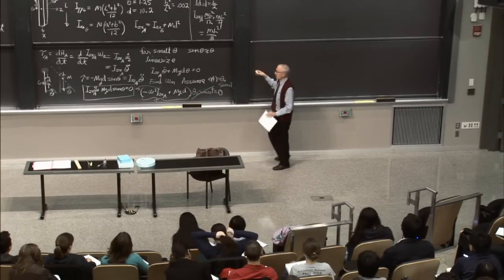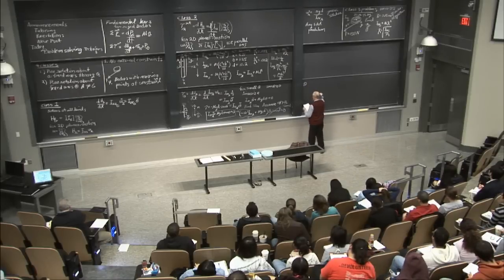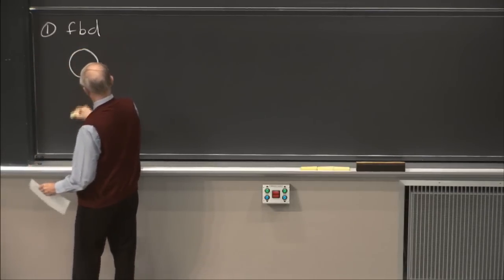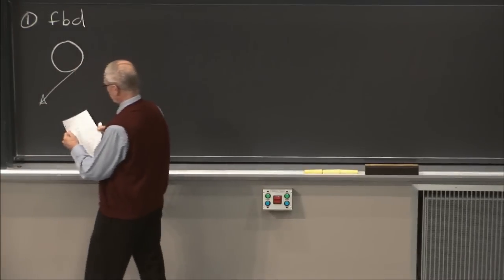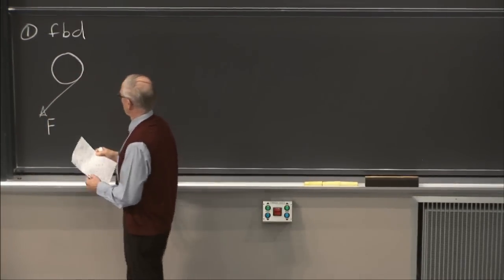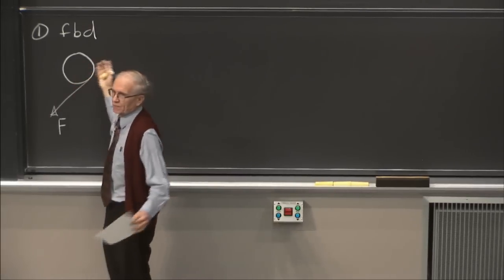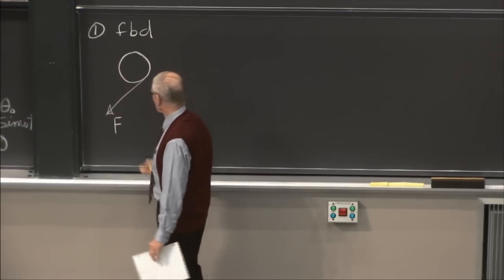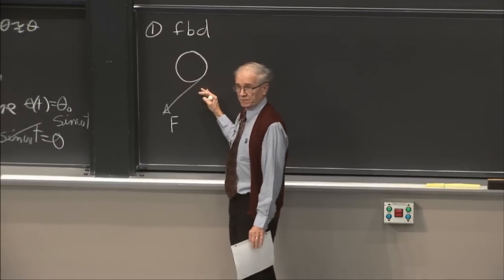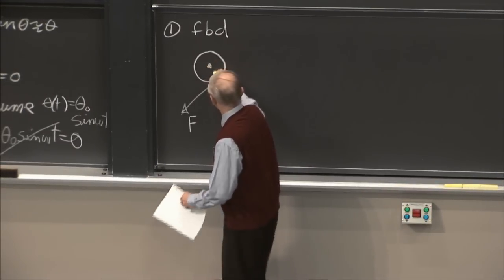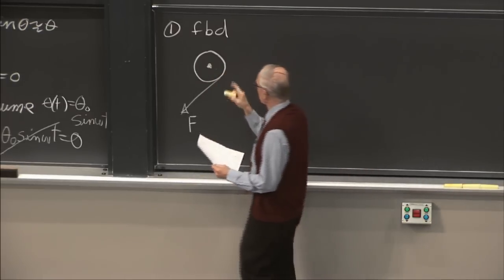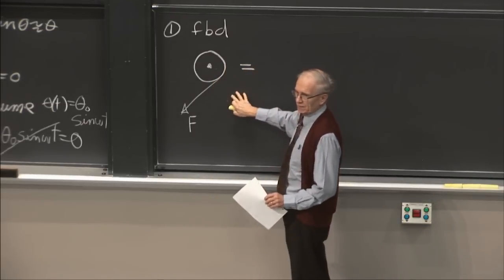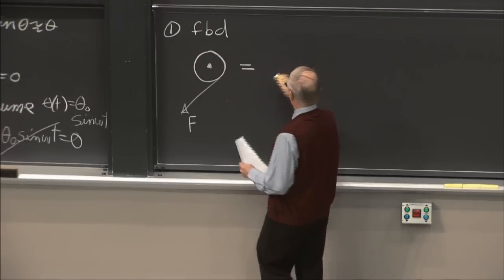We've set up the problem. Now, for the free body diagram: here's the disk, here's the force. The only external force in the plane is F. This problem can always be recast: instead of a force not acting through the center of mass, replace it with a force acting at G plus a pure moment acting about the center of mass. You can always make this transition.